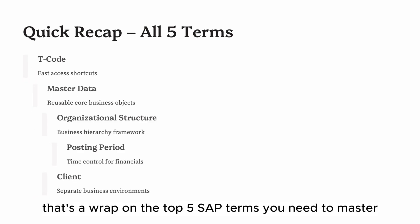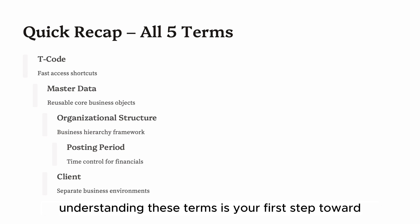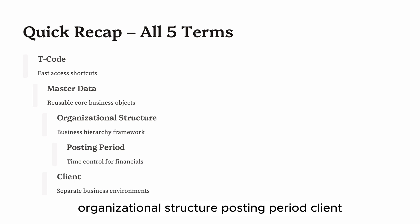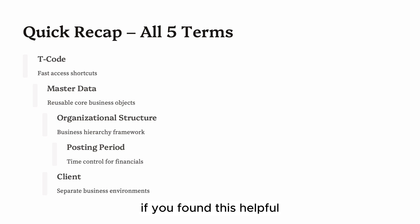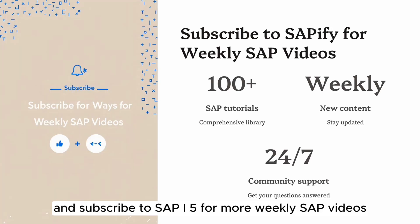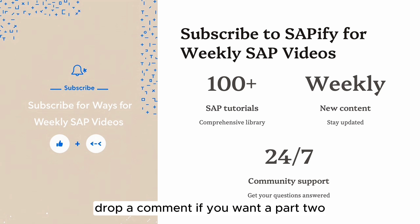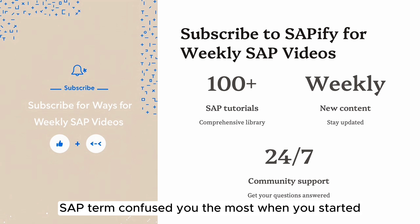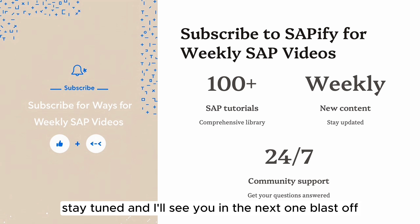That's a wrap on the top five SAP terms you need to master as a beginner. Understanding these terms is your first step toward SAP fluency. Quick recap: T-codes, Master Data, Organizational Structure, Posting Period, and Client. If you found this helpful, smash that like button and subscribe to SAP i5 for more weekly SAP videos. Drop a comment if you want a part two, or let me know which SAP term confused you the most when you started. Stay tuned — see you in the next one!